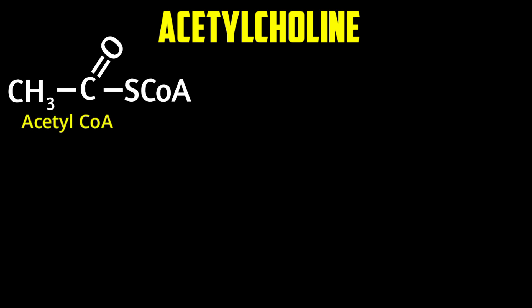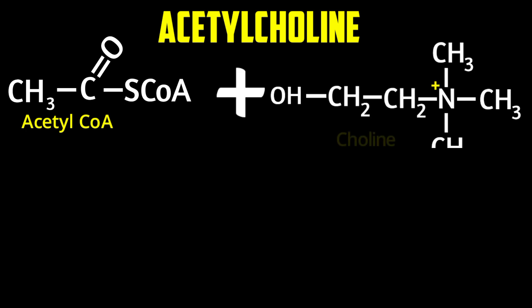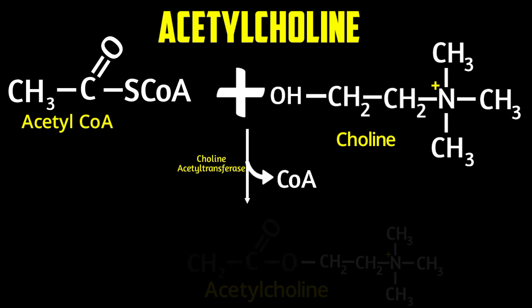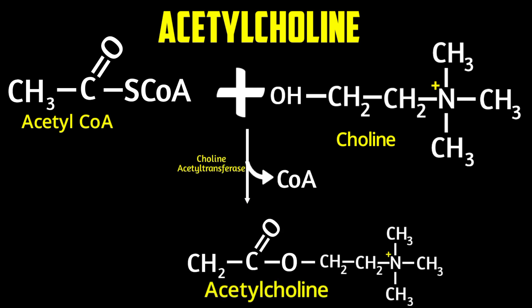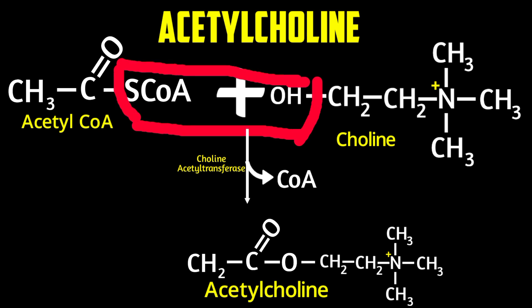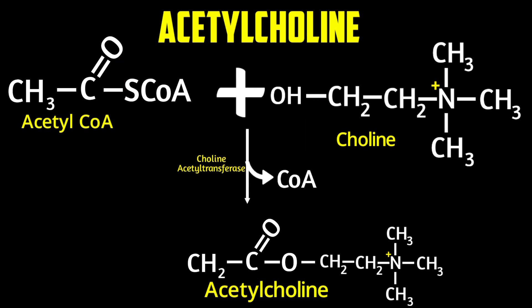Looking at the structure: acetyl-CoA has a two-carbon CH3 group bonded to a carbon with a double-bond oxygen, bonded to the CoA group. This is added to choline, which has a nitrogen bonded to three methyl groups. The enzyme acetyltransferase removes the CoA and OH groups, forming acetylcholine.